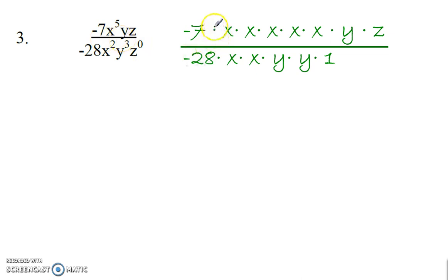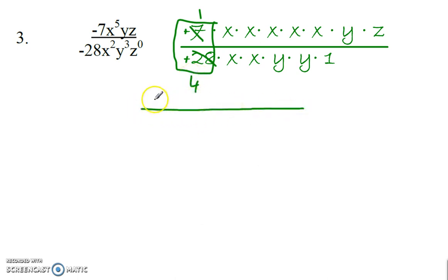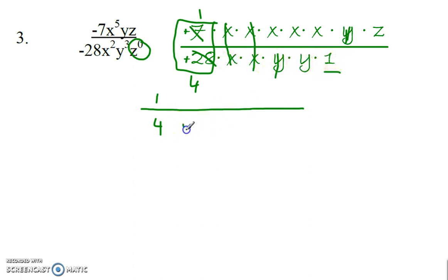And we have negative 2, d to the fifth, over c to the eighth. If we write this out again, treat the coefficients as their own fraction. We can simplify this: negative divided by a negative gives me a positive. 7 goes into both of these, gives me 1 here and 4 there. Then I'm going to start canceling out the variables — x and x, x and x, a y and a y. And I turn this z to the zero power into a 1. So then we have y times 1 left on the bottom, which is just y. On top we have x to the third power z. So my answer is x to the third power z over 4y.